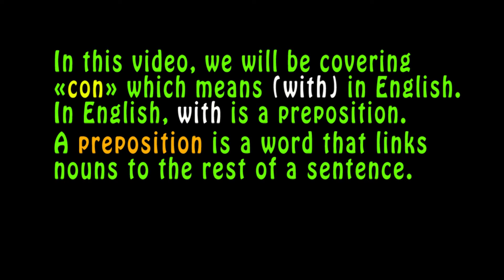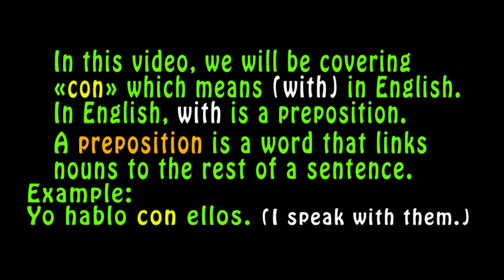In this video, we will be covering con, which means with in English. In English, with is a preposition. A preposition is a word that links nouns to the rest of a sentence. For example, yo hablo con ellos — I speak with them. Con links yo hablo with ellos.